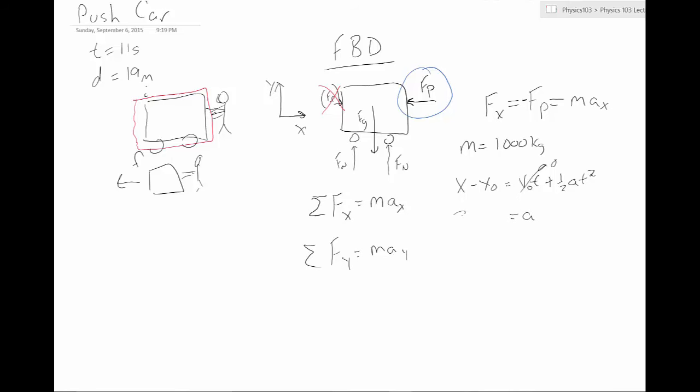This just says that the distance traveled is just equal to one half a t squared. If I go ahead and solve for a, I'm going to multiply by two, so I get two times x minus x zero. And then we divide it by t squared. Or if we plug in our numbers, we get two times the x minus x zero is just our d. It's just the distance that we traveled. So we just get 19 meters. And then we get t squared, which is 11 squared. Unfortunately, I don't have a calculator right here, so let's just go ahead and do this by hand. This is going to be 38. This is going to be 121.